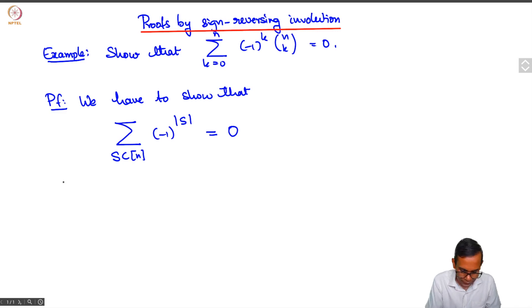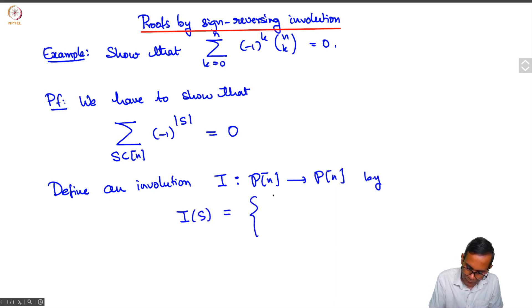One way to show this is to define a function, an involution—an involution is a function whose square is the identity, composed with itself gives the identity. We will call this I from the power set of the set of n elements to the power set of the set of n elements. I of s is s union n if n does not belong to s, and it is s minus the point n if n belongs to s.